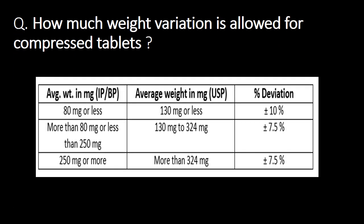Next question: how much weight variation is allowed for compressed tablets? For tablets weighing 80 mg or less, the allowed standard deviation is 10%. For tablets weighing more than 80 mg and less than 250 mg, the allowed average weight variation is 7.5%. For tablets weighing 250 mg or more, the allowed average percent deviation is also 7.5%.